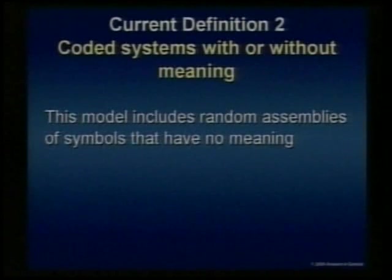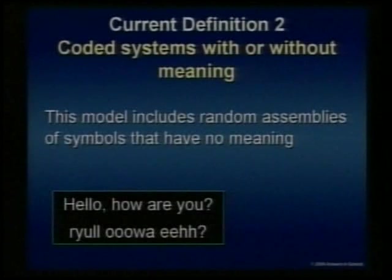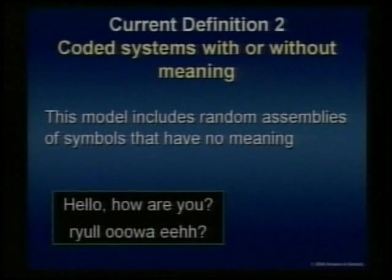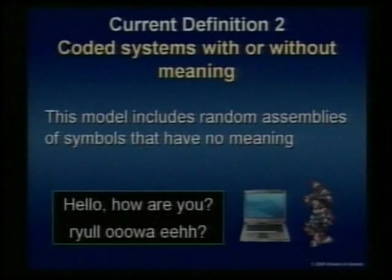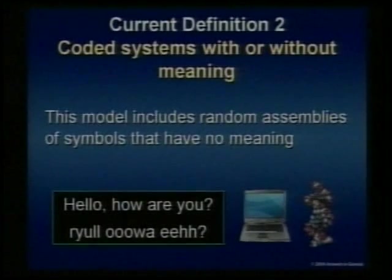This model includes random assemblies of symbols that have no meaning. There's a sentence: 'Hello, how are you?' And there's the same number of letters below — same letters exactly — and we are told by evolutionists the bottom line has more information than the top line. Is there a logical disconnect here? Have we just abandoned all logic? Let's suppose your computer's on the blink. You call up a computer engineer to fix it, and what they do is take your entire operating system, scramble all the code, and say 'here it is' — then charge you $500. Would you be happy? And they walk away saying you got more information now than before. That's an example of coded systems with no meaning. Or how about this: you go to a hospital because you're not feeling well.